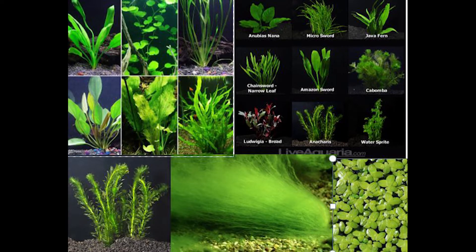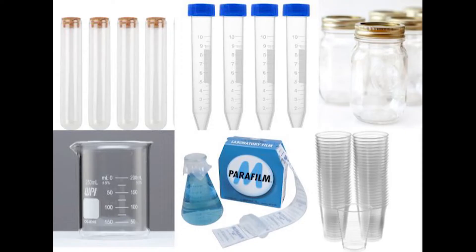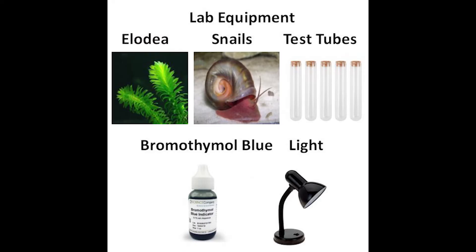To run this lab you're going to need an aquatic plant such as those found for aquariums. You also need an aquatic organism such as snails, shrimp, fish, or water insects. You also need a sealable container such as a test tube, beaker, mason jar, or even a plastic cup. For this lab I'll be using Elodia, snails, and test tubes.